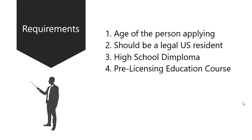The fourth requirement is to complete the pre-licensing education course. Every state has different requirements for the hours of coursework you need to have. For instance, Massachusetts requires 40 hours of classroom time whereas California requires 135 hours of classroom time. In order to take the exam, you first need to get this education, and this pre-licensing education course provides you with the basic concepts of starting your career as a real estate agent.